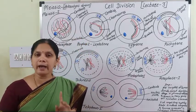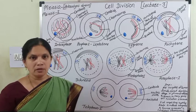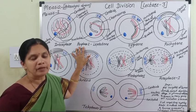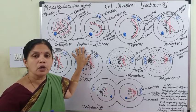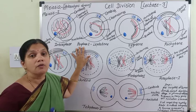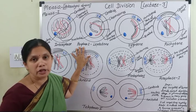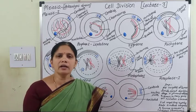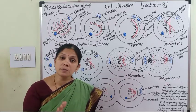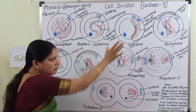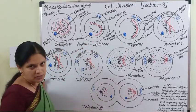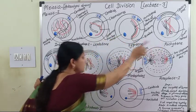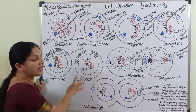The first stage of karyokinesis I is prophase I, which is a longer stage because it is again divided into five sub-stages: leptotene, zygotene, pachytene, diplotene, and diakinesis.